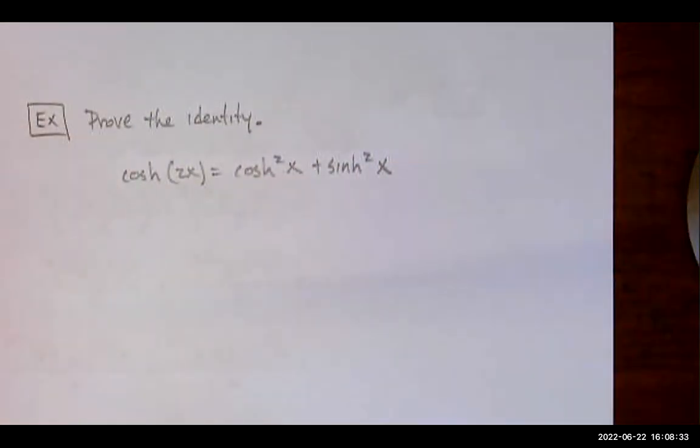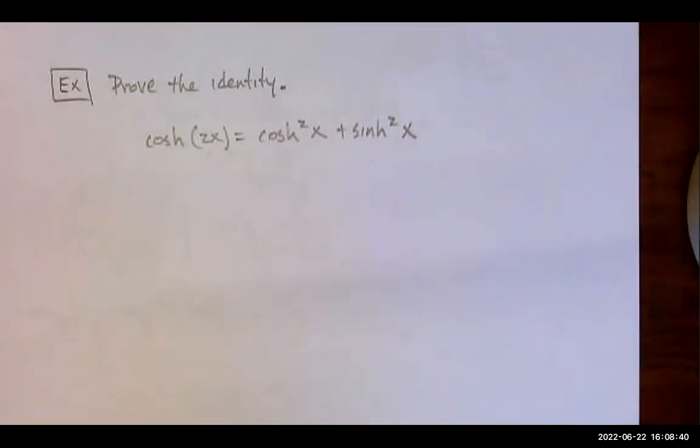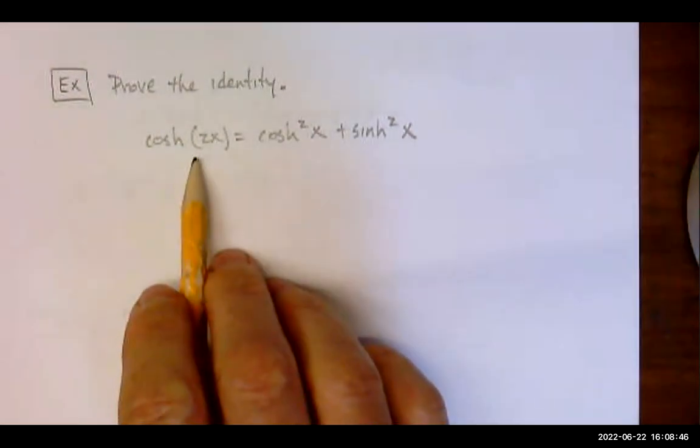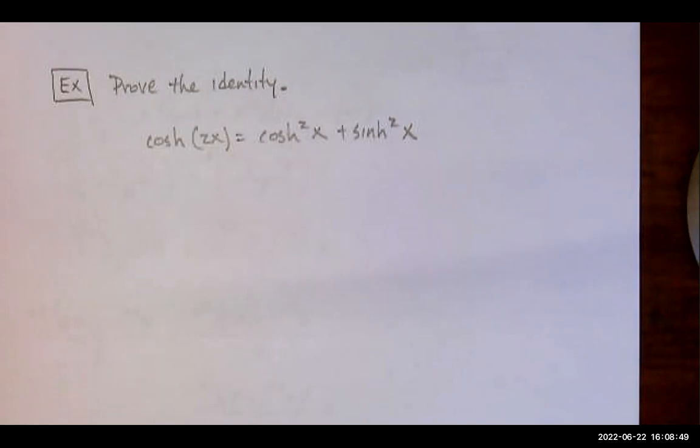We're trying to prove that cosh 2x equals cosh squared x plus sinh squared x. In order to do this, there's definitely more than one way, but the most straightforward way to do it is to say, okay, whichever side I choose to begin with, I'm going to go back to the definition of cosh and sinh with all of the e's.